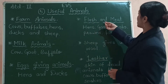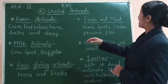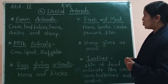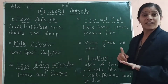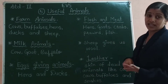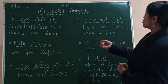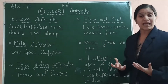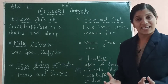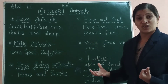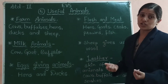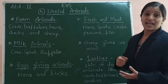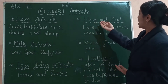The next point is flesh and meat. Animals like hens, goats, crabs, prawns, and fish give us flesh. The flesh of hens is consumed by human beings. The flesh of goats is also eaten by human beings. Crabs — called khekara in Marathi — and prawns, known as jhinga, along with various types of fish, are all consumed by people. All these animals — hens, goats, crabs, prawns, and fish — are used for flesh and meat.